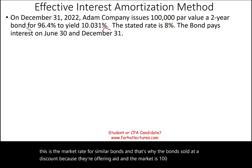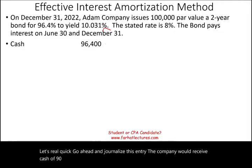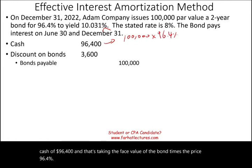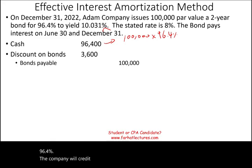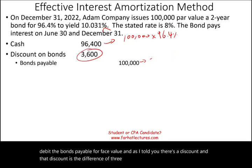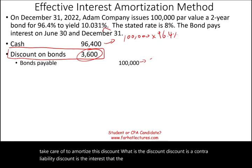Let's go ahead and journalize this entry. The company would receive cash of $96,400 — that's the face value of the bond times the price, 96.4%. The company will credit bonds payable for $100,000. You will always credit and debit bonds payable for face value. There is a discount, and the discount is the difference of $3,600. This is the amount we need to amortize.